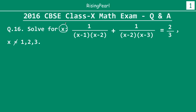Solve for x, where we have been given an equation: 1 divided by (x−1)(x−2) plus 1 divided by (x−2)(x−3) equals 2/3, where x is not equal to 1, 2, and 3. On a quick glance, we can see that if you put x equals 1 into this equation,